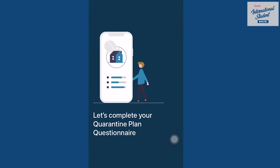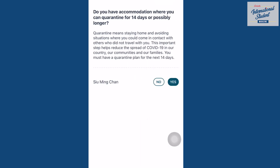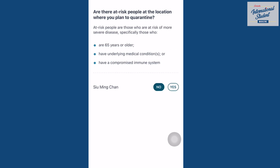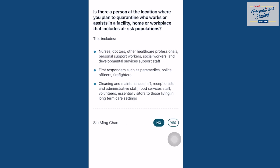You will be asked to input your quarantine plan information. This includes where you plan to quarantine for 14 days or longer, who you will be around in your quarantine, and if you will have access to life essentials. Be sure that your quarantine plans do not involve high-risk populations or those working with high-risk populations.